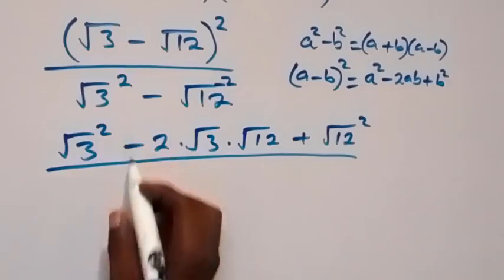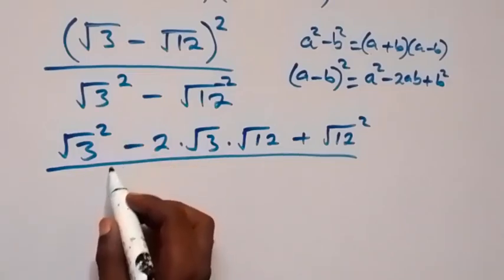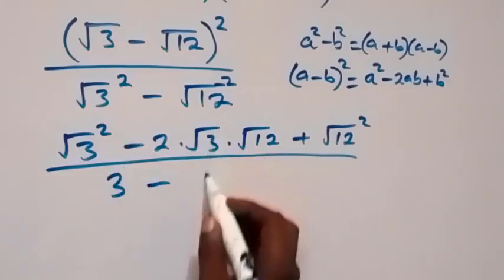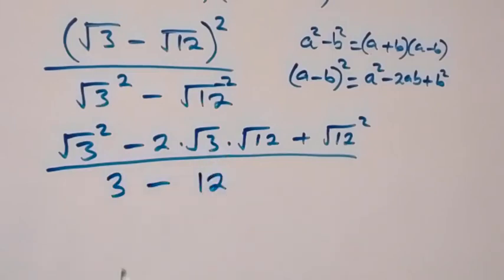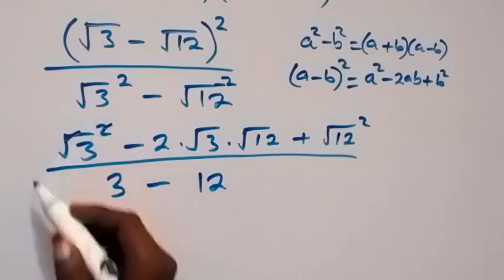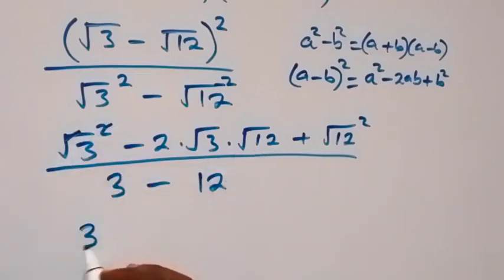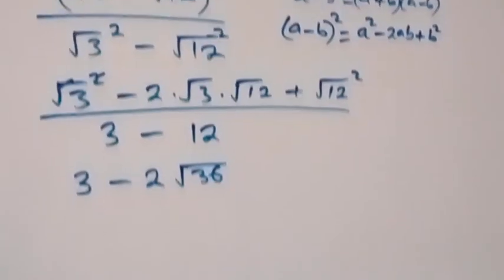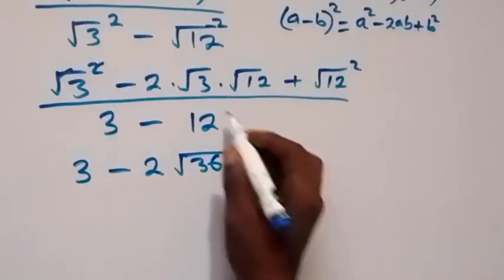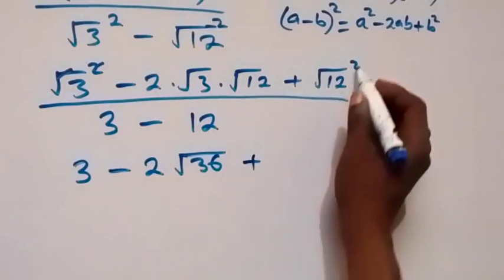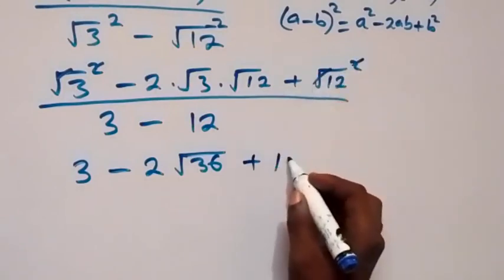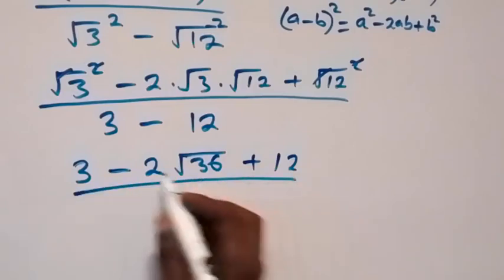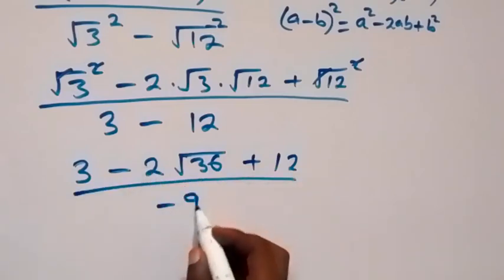The square will cancel the square root, and we have 3 minus 12. Also square cancel square root here. That will be 3 minus 2, this will be root 36. We have root 36 then plus 12 over 3 minus 12, that is minus 9.